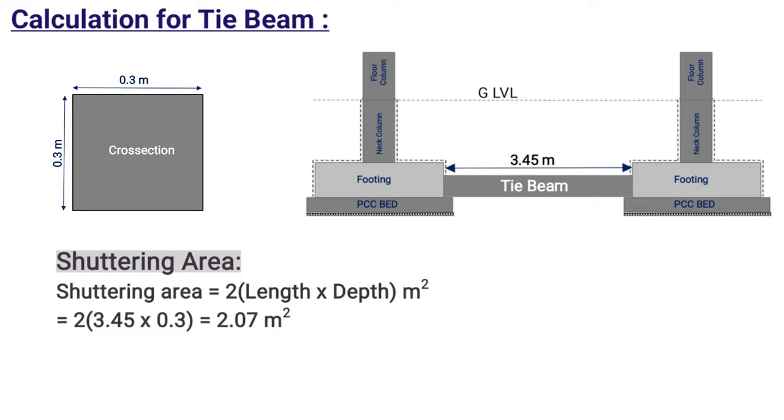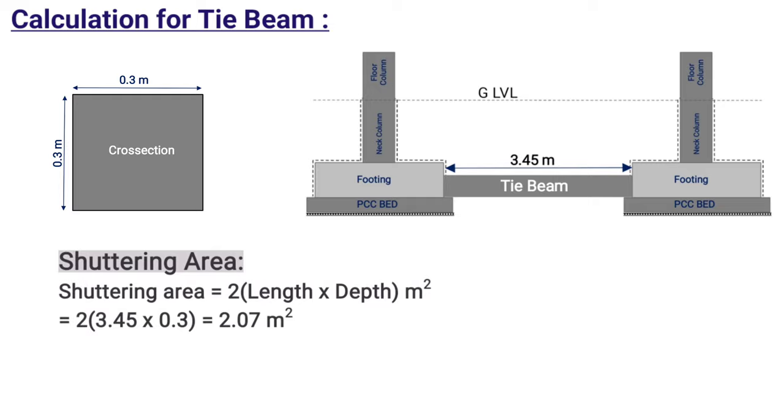The shuttering area for this tie beam will be equal to 2 times its length times depth, which will be equal to twice 3.45 times 0.3. So shuttering area will be equal to 2.07 meter square.